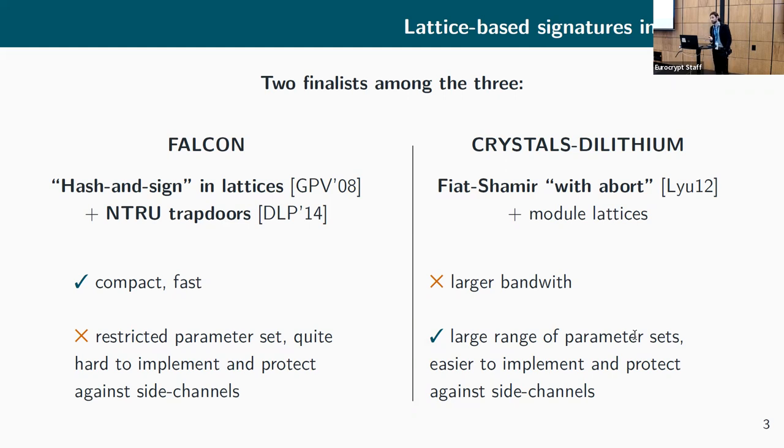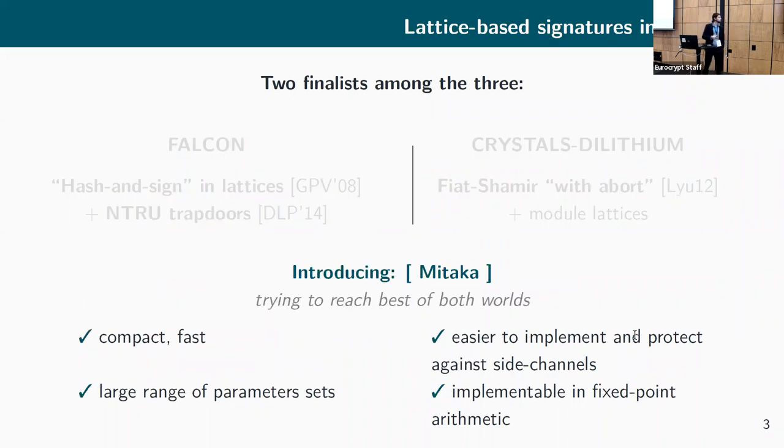On the other hand we have the Dilithium signatures from the CRYSTALS suite, which follow the Fiat-Shamir with abort paradigm from Lyubashevsky and are instantiated over generic module lattices. It has larger bandwidth compared to Falcon, but it admits a wide range of parameter sets. It's easier to implement and therefore easier to protect against side channels. Today I'm glad to present our signature proposal Mitaka, where we try to reach the best of both worlds. We want a signature which is compact and fast, which enjoys a large range of possible instantiations to have fine-grained security levels, but we also want it to be easy to implement and protect so it can be deployed, and we want it implementable on fixed-point arithmetic for constrained devices.